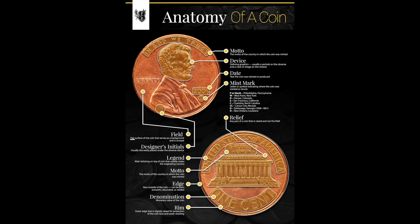The motto is the motto of the country in which the coin was minted — in the case of this penny, 'In God We Trust' on the obverse. The device is a defining graphic, usually a portrait on the obverse and a crest or image on the reverse. The date is the year the coin was minted. The mint mark has three main marks — P, D, and S — standing for Philadelphia, Denver, and San Francisco, although further back in time there are older mints that exist.